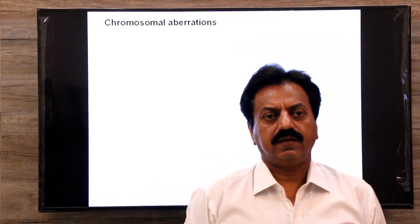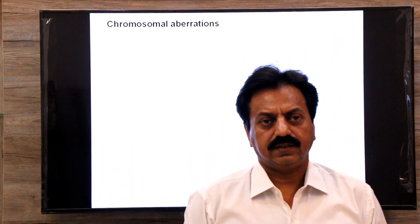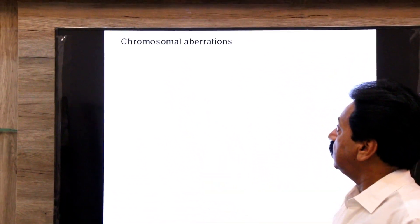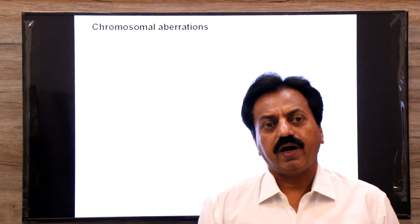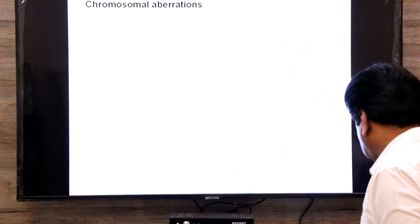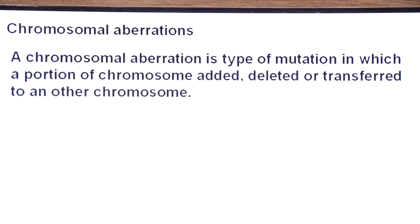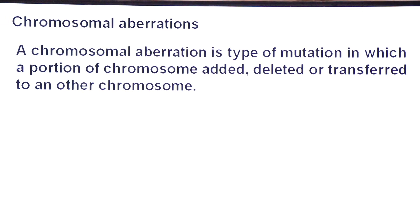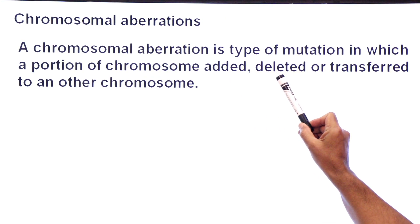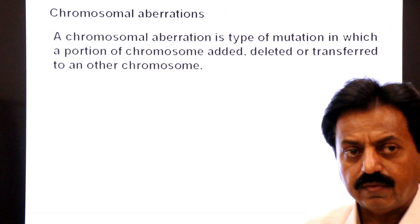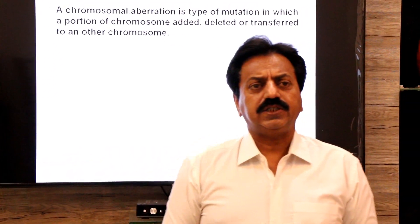Hello guys, welcome back in our biology class. Yesterday we discussed point mutation. Today we will discuss chromosomal aberrations. A chromosomal aberration is a type of mutation in which a portion of a chromosome is added, deleted, or transferred to another chromosome.